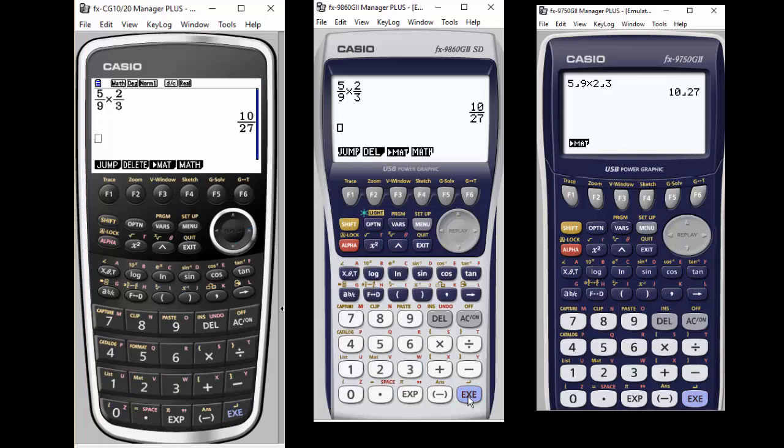But once you have the fraction in all three calculators, you can toggle between decimal and fraction form. But the first two calculators have that natural display that the third calculator does not have. So if that's important to you, then you might choose the first two options as your calculator.